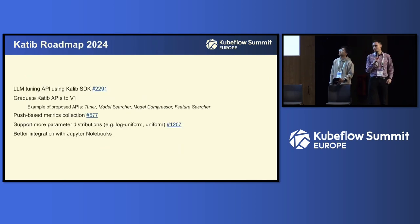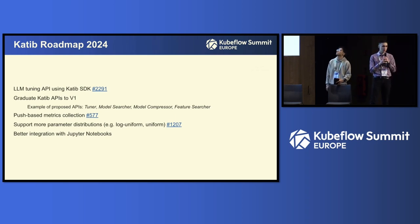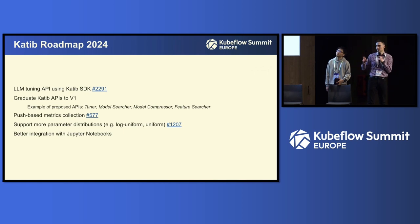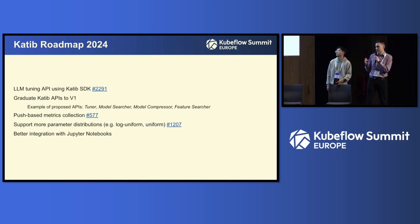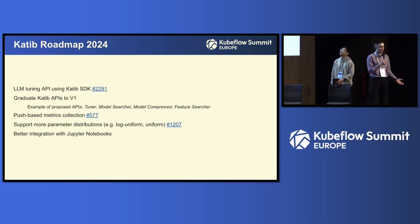In our 2024 roadmap, we're looking at several items. First, we're trying to be closer to the newest LLM capabilities — we recently implemented a new train API to fine-tune LLMs. We're also working to graduate Katib to V1, defining new APIs like Tuner and Model Search, supporting feature engineering and model compression, push-based metrics via Python SDK, more parameter distributions like log-uniform, and Jupyter Notebook integration since that's the main tool for Kubeflow users.